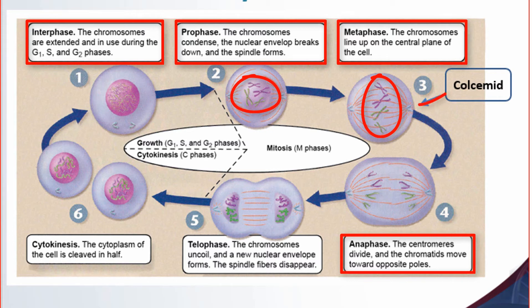At this stage — the metaphase — the colcemid is acting right here, which will disrupt all these spindle fibers so the cell no longer goes to anaphase. So the cell does not begin to divide, and the chromosomes stay in their sister chromatid configuration — the X configuration — instead of what you might call the unichromatid configuration, which would be one copy each.